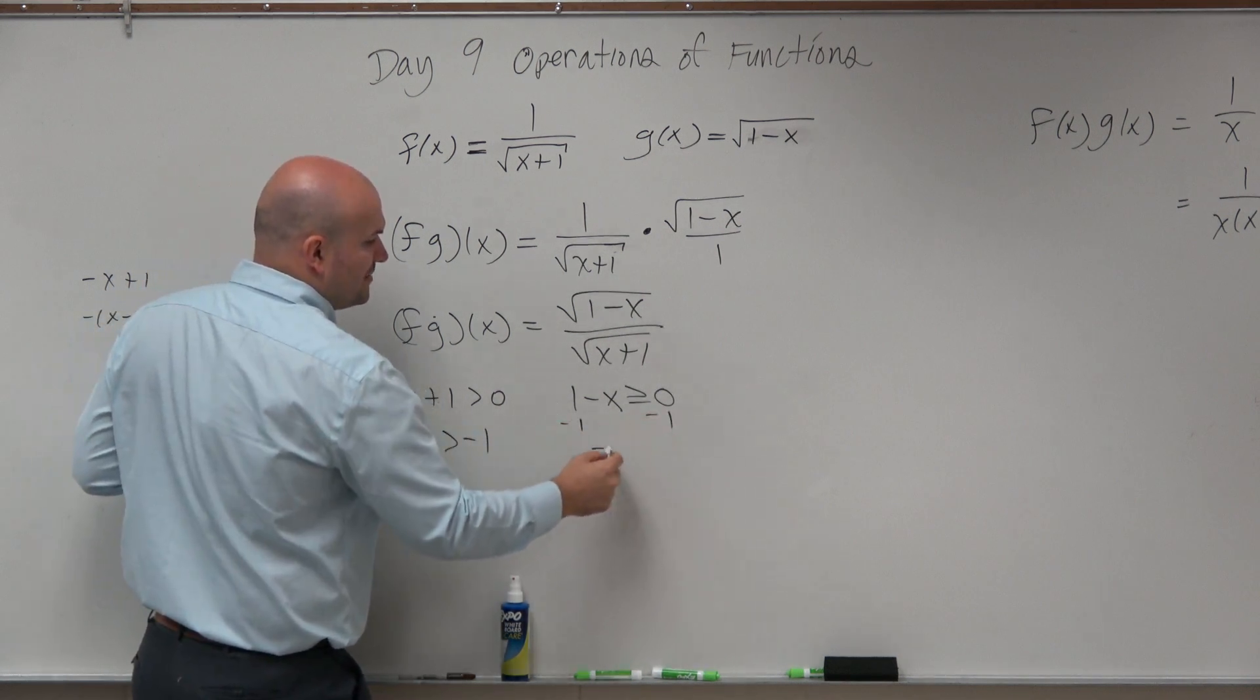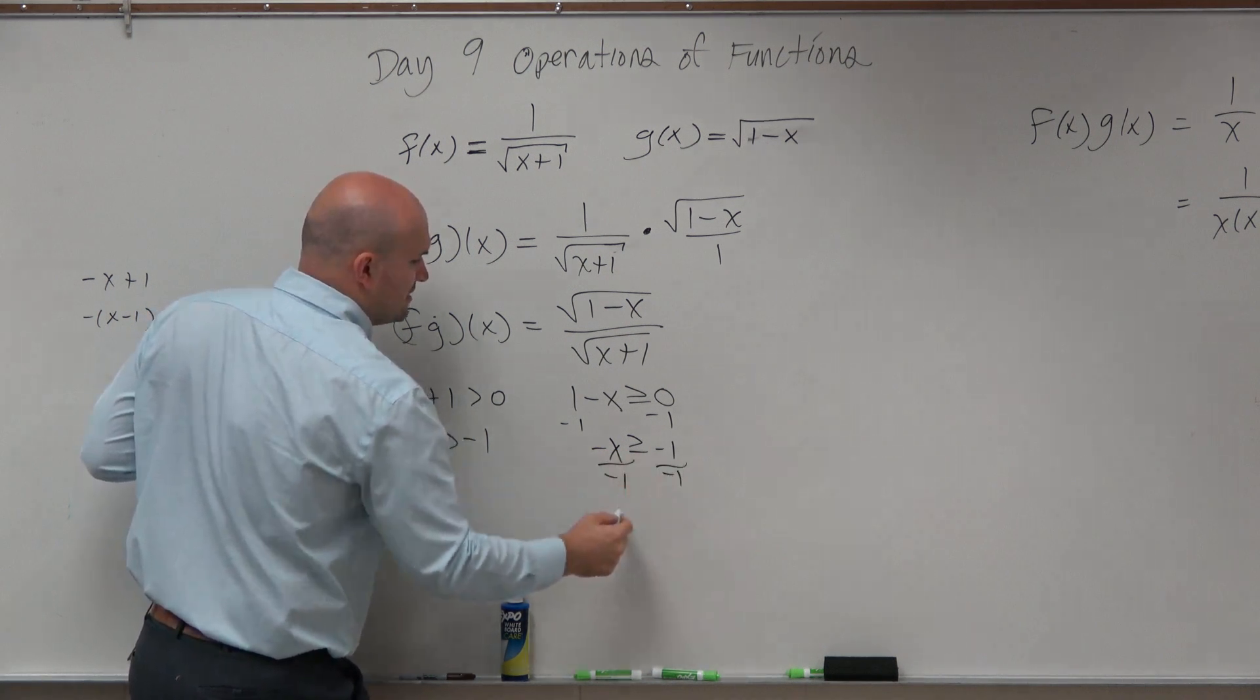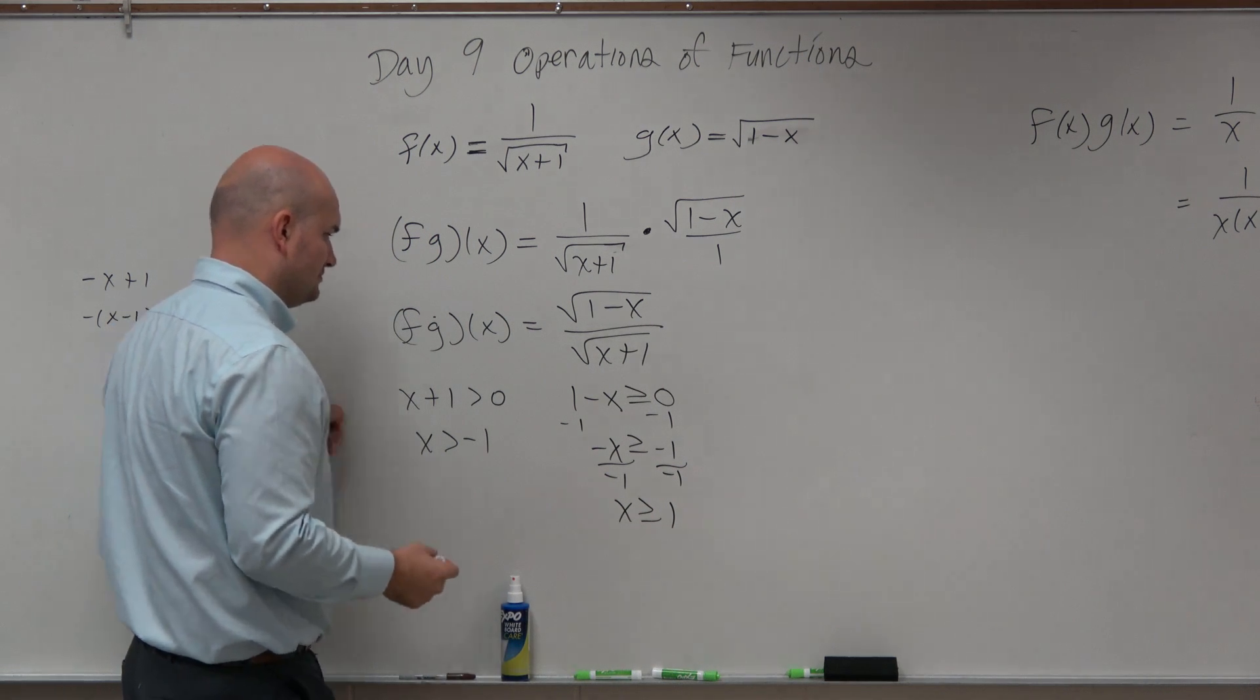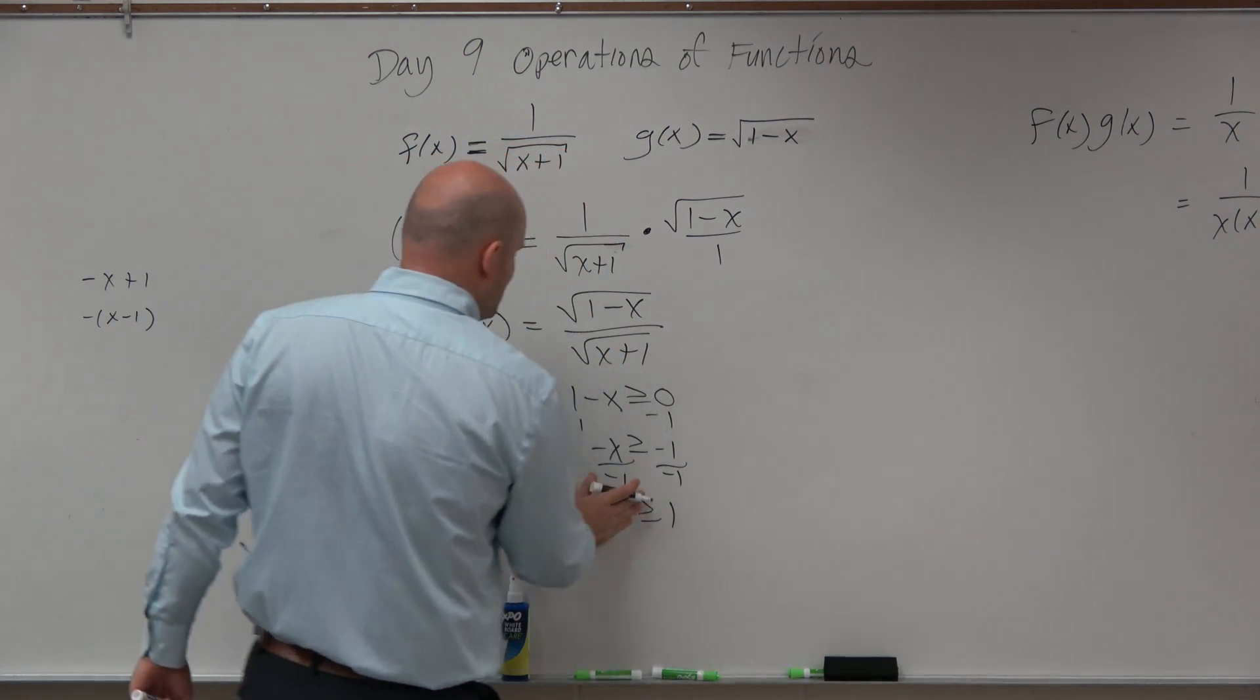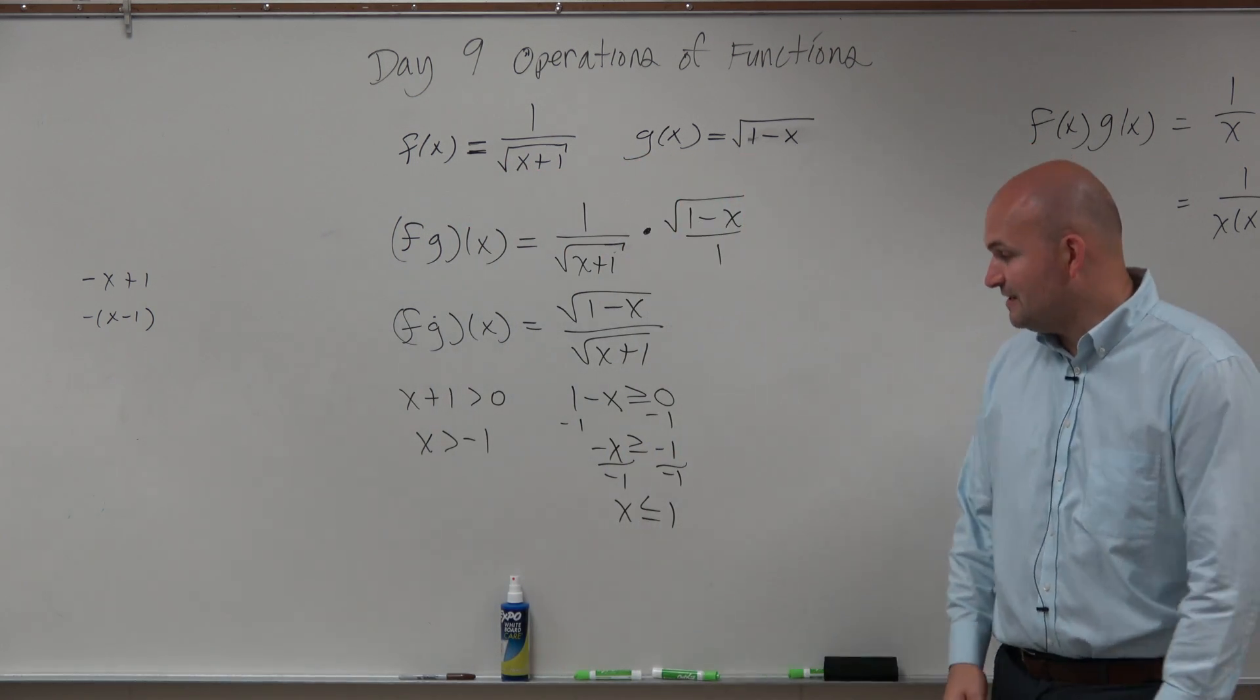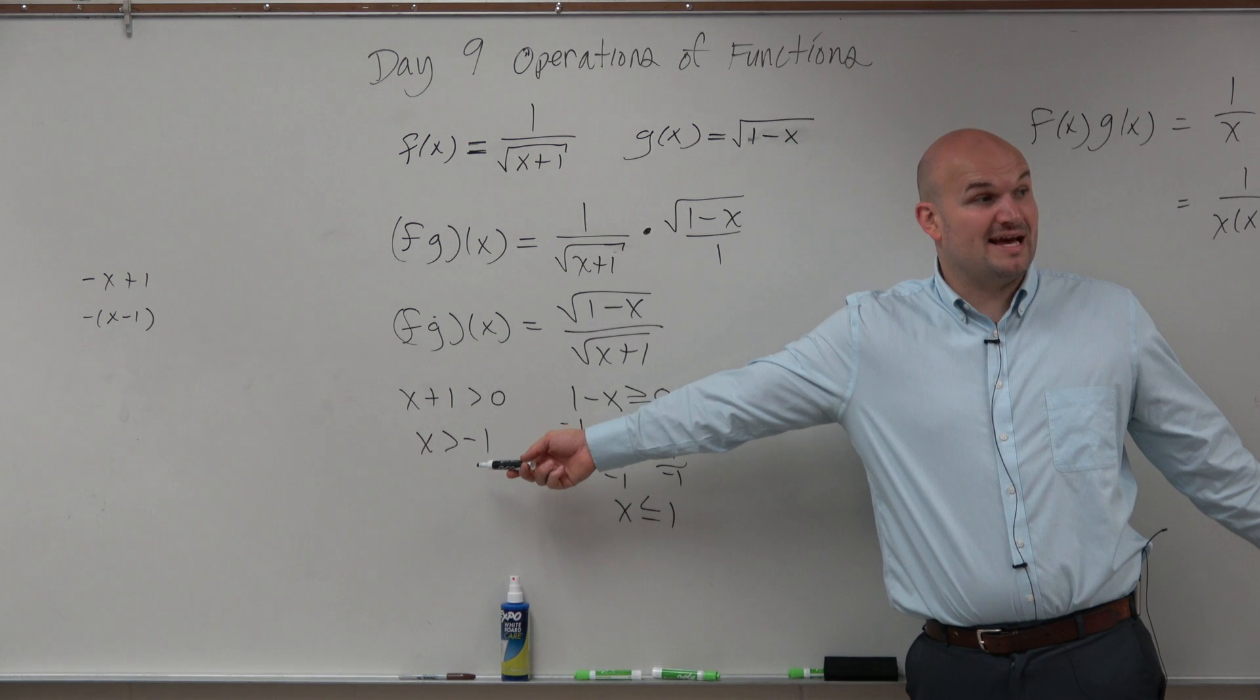Here we solve, but remember this has the flipping of the sign. x has to be greater than or equal to positive 1. Oh, I'm sorry, I forgot to flip the sign. When you divide by a negative, you have to flip the sign. So all values of x have to be greater than negative 1.